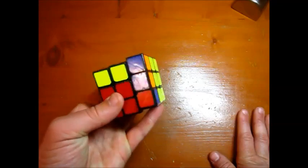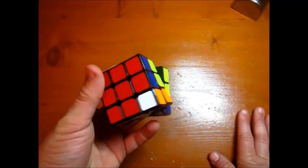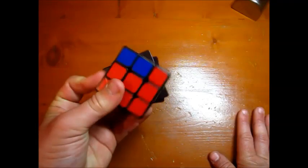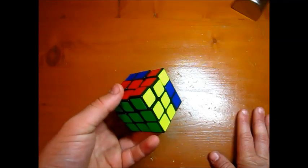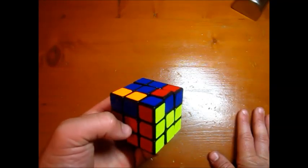But the other way that you could insert it is to do a sledgehammer, which is R prime F, R, F prime. And so basically that's just a different way of inserting it, but if you look closely it misorients some edges.